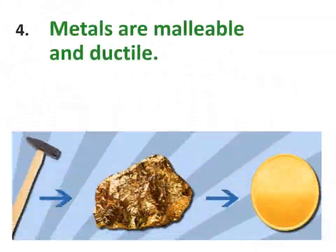4. Metals are malleable. Metals are described as malleable and ductile. This is because of the ability of the atoms to roll over each other into new positions without breaking the metallic bond.